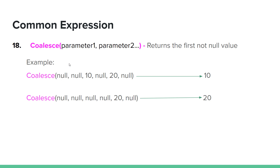Now we have the same parameter. This is the return. If you want to return the first non-null value, the value is returned. For example, if the parameter is true, the value is returned. I will see you in the next one. This is the SQL Server.